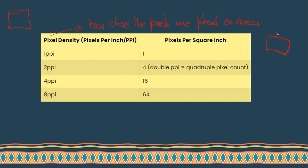For one pixel per inch, only one square appears. For two pixels per inch, in one inch you get four squares total. For four pixels per inch, you get sixteen squares. For eight pixels per inch, you get sixty-four squares.